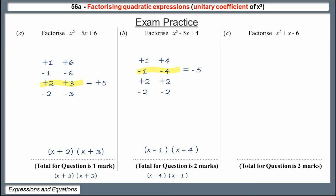Question C: the product this time is minus 6, so because the product is negative the signs will alternate. List the numbers that multiply to make minus 6. The middle term of this expression is just plus x, meaning the coefficient is 1, so the pair must add to plus 1. That's the bottom pair: minus 2 and plus 3 is plus 1. So the answer is x minus 2 and x plus 3. The order of the brackets doesn't matter, as long as it's definitely a plus 3 and a minus 2.